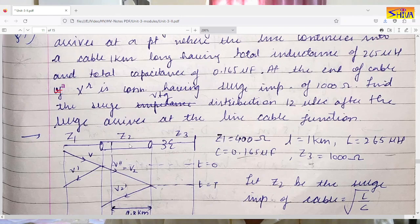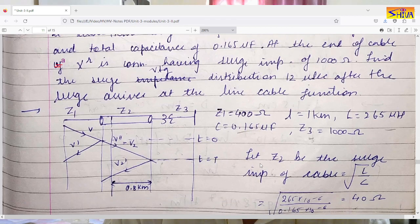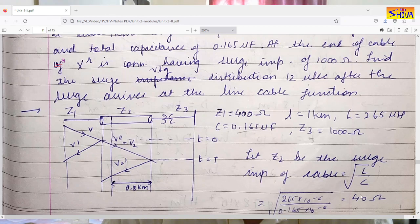The cable length is one kilometer, so inductance is 265 µH/km and capacitance is 0.165 µF/km. The surge impedance of the cable is √(L/C). Substituting the values, the surge impedance of the cable is 40 ohms. The surge impedance of the transformer is given as 1000 ohms.